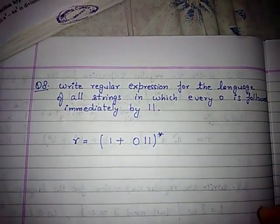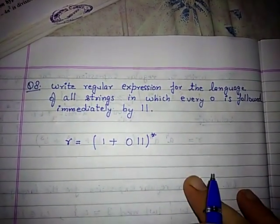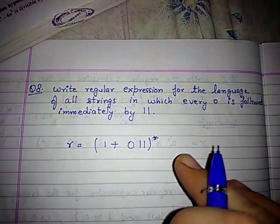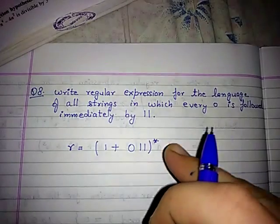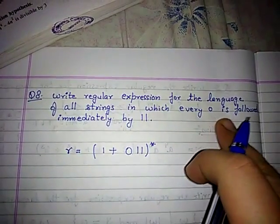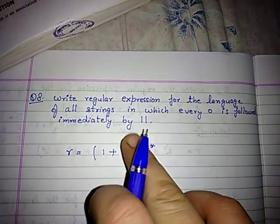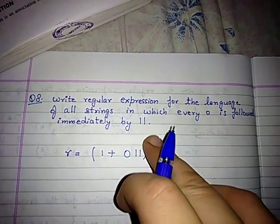In the next example, we have to write the regular expression for the language in which every zero is immediately followed by double one (11).